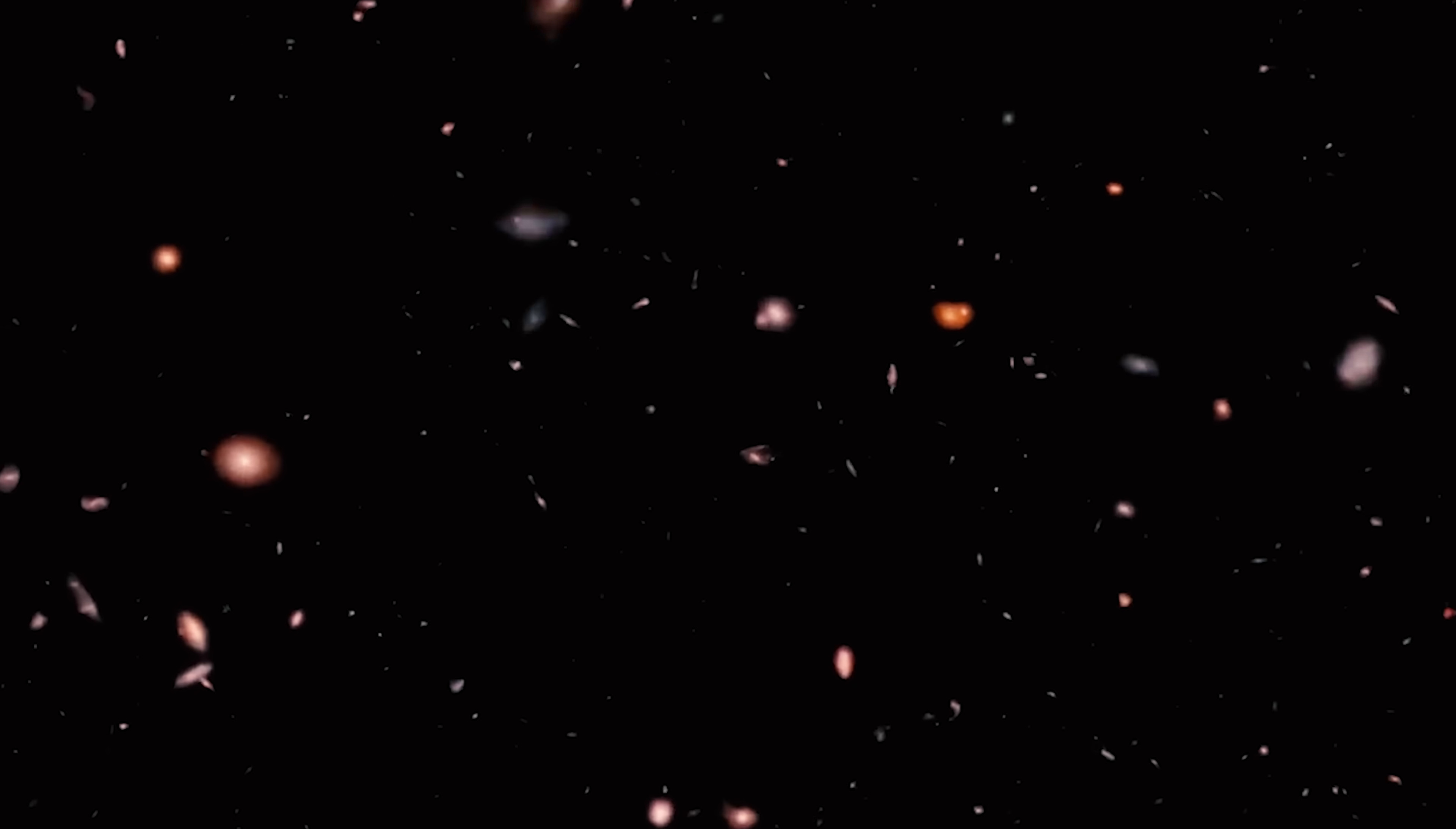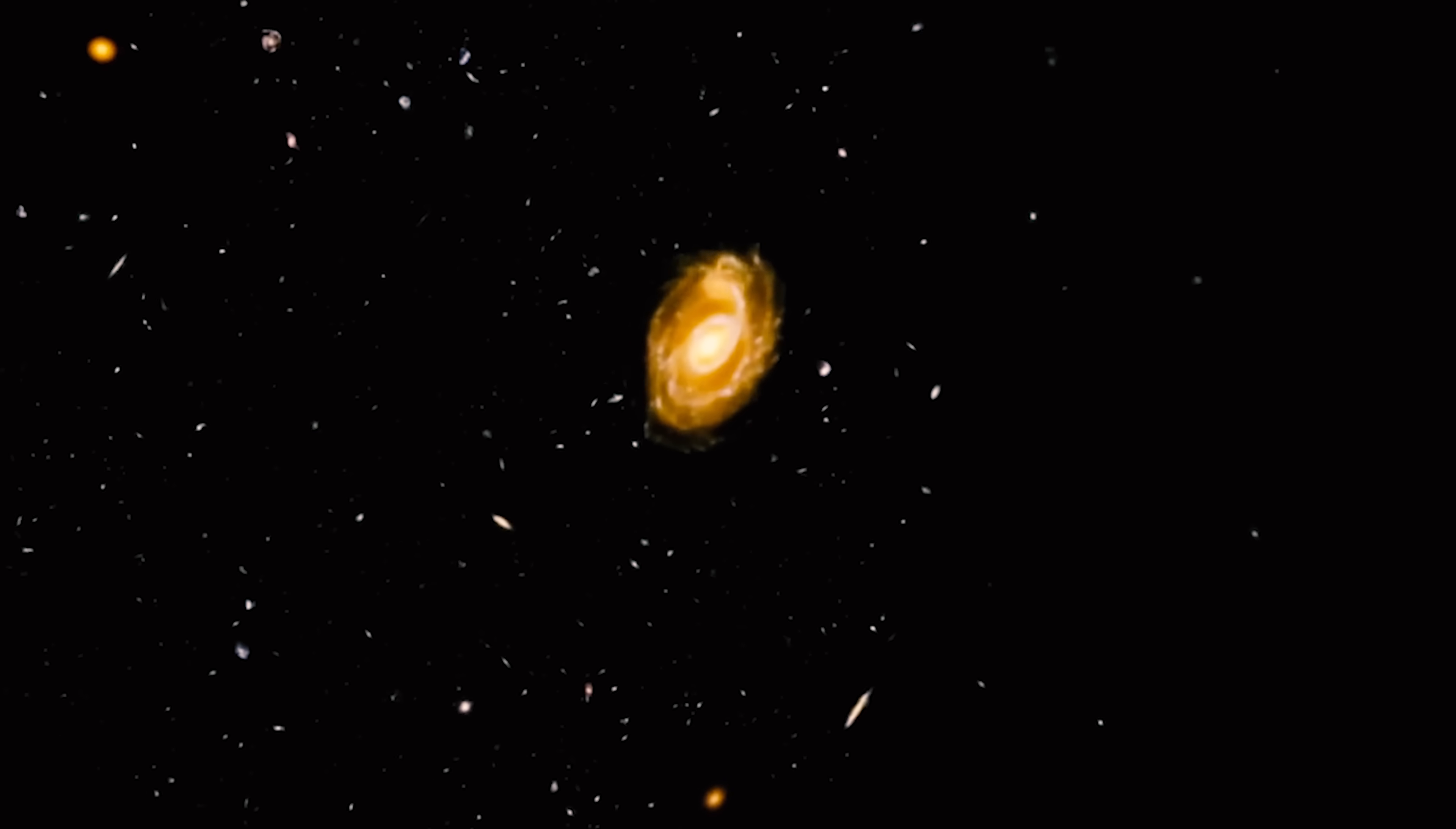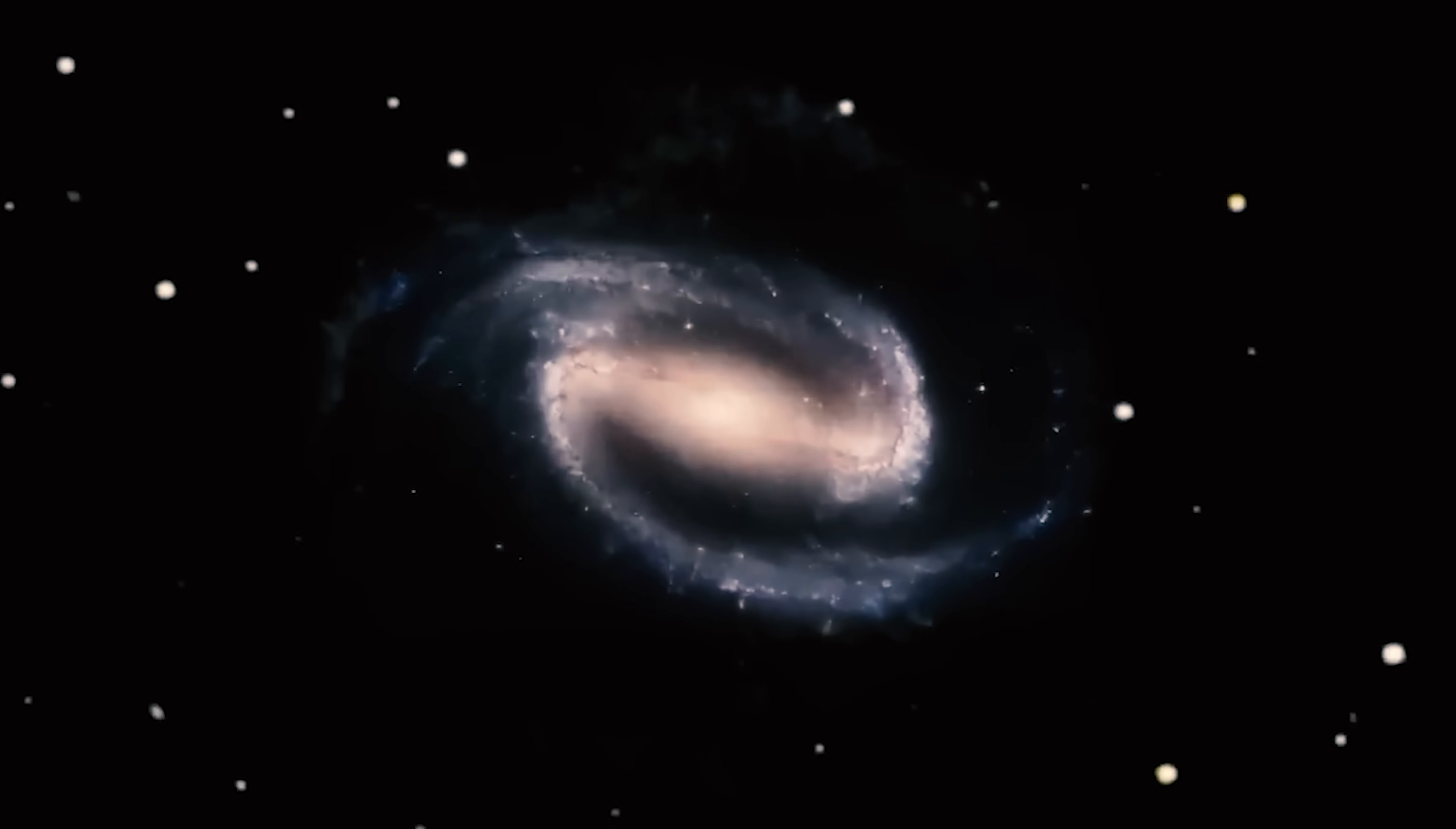Traditionally, astronomers believed that this galactic structure marked the conclusion of a galaxy's formative years, expecting it to be observed solely in mature galaxies, potentially those halfway through the universe's evolution. Previous observations by the Hubble Space Telescope, which focused on galaxy morphologies, led scientists to assume that the early universe housed very few barred galaxies. However, our understanding of the early universe is undergoing a transformation. The latest findings, derived from data collected by the Webb Telescope, challenge the notion that barred spirals must have emerged only recently in the universe.